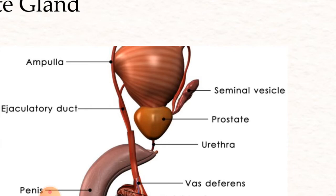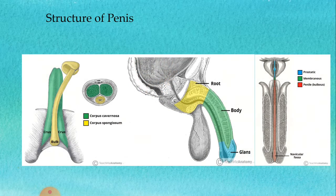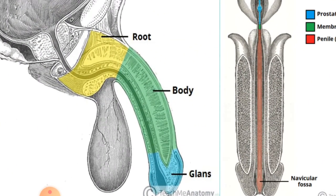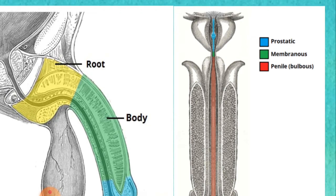This condition of prostatic hypertrophy occurs at the age of 50 and above. Next, we will talk about the structure of the penis, but before that we will discuss the parts of the urethra.